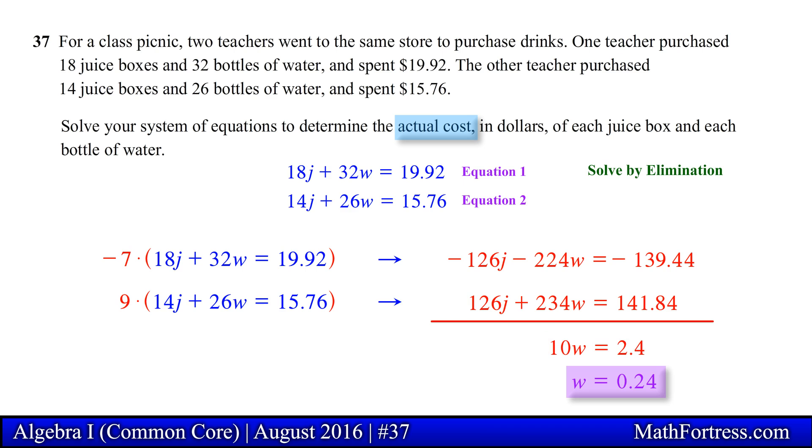The last step is to substitute this value into one of the original equations and solve for the other variable, in this case j. Substituting the value for w into the first equation and solving for j, we obtain 0.68. So the price of the juice box was 68 cents and the price of the bottled water was 24 cents. This is our final answer.